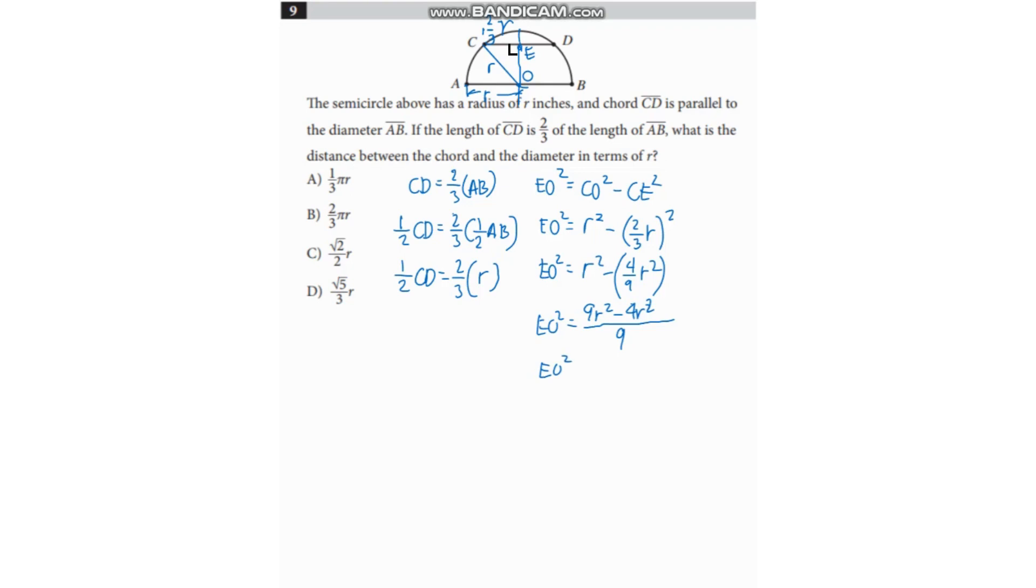You have EO squared is equal to five R squared over nine. So if you get the square root of both sides, you have EO is equal to R square root of five over three. And that is letter D.